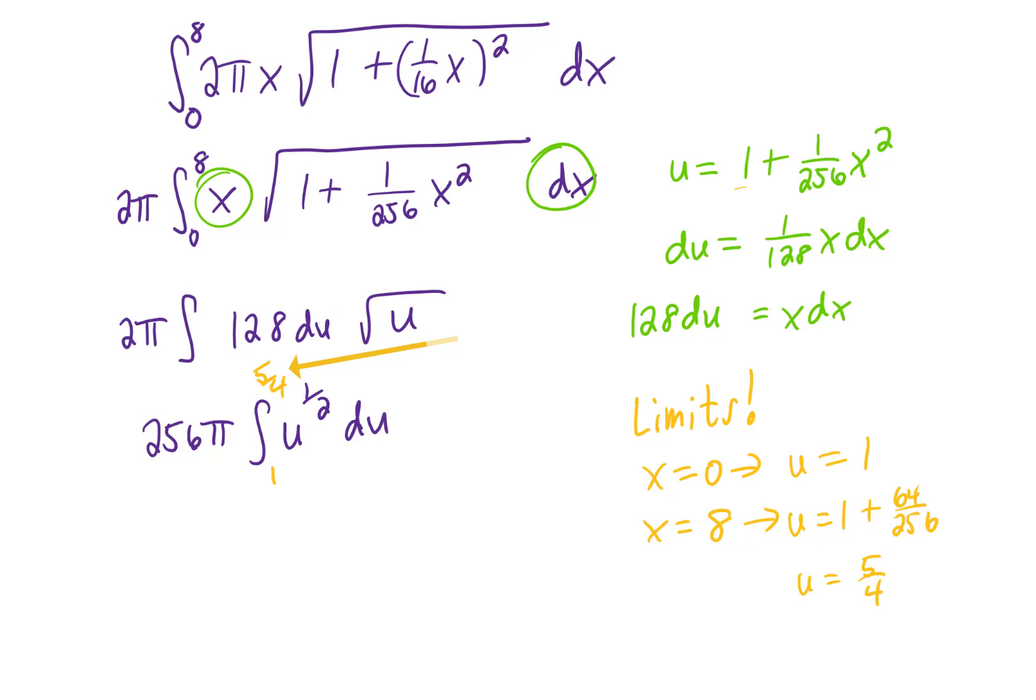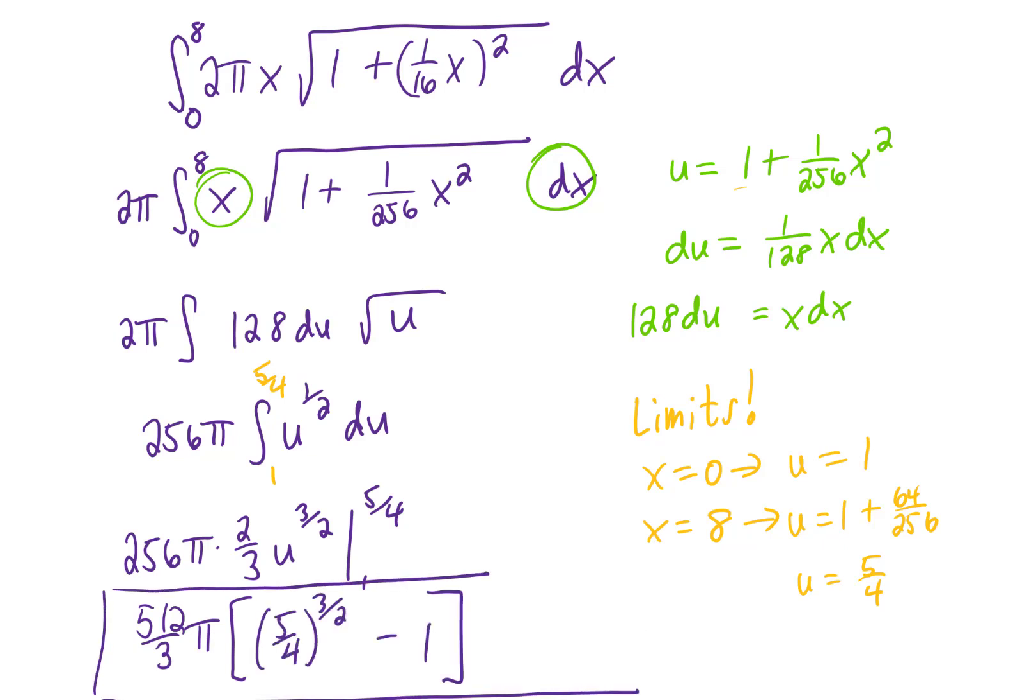Let's now integrate and finish this problem. Adding 1 to the power of 1 half gives us 3 halves. Dividing by that gives us 2 thirds. Multiplying by 256 gives us 512 over 3 π. Plugging in our upper and lower limits of integration gives us this number, which is the surface area of that parabolic satellite dish measured in feet squared.